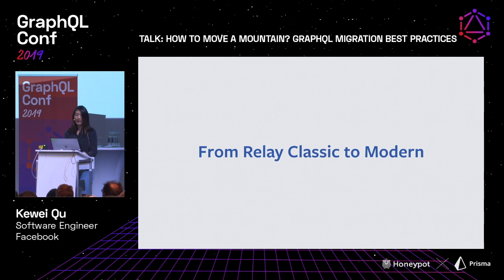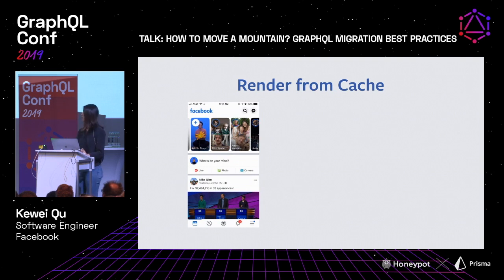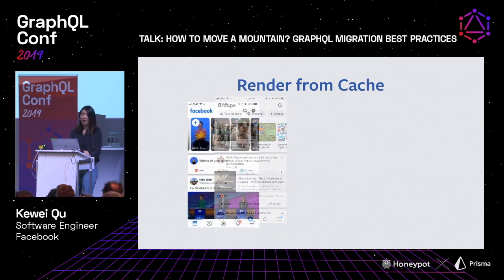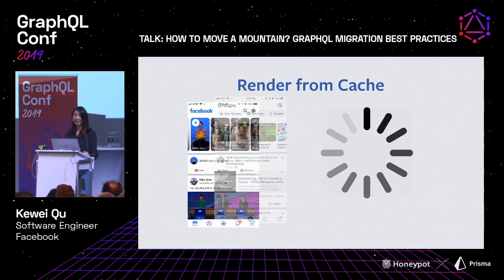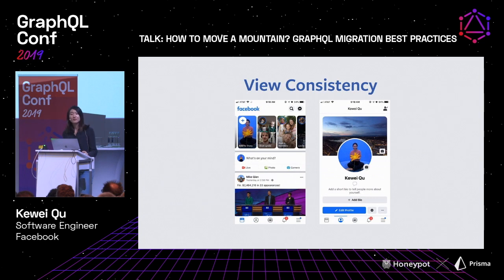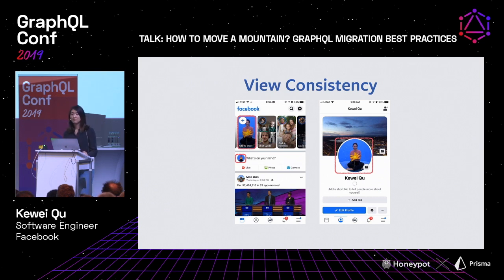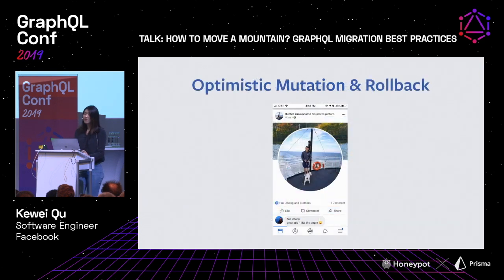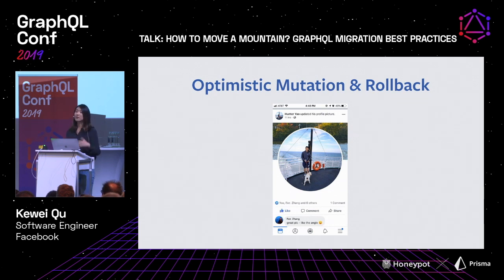Relay Classic already provides us with a lot of features to make our app a better experience. To name a few: we have render from cache — if I navigate from one surface to another and come back, I should be able to render immediately from cache without showing a spinner or going to the network again. Next, we have view consistency — if I change my profile picture, everywhere in the app that shows my profile picture should display the new one. And lastly, we have optimistic mutations and rollback. If our users click the like button under a post, we should expect the like button to turn blue immediately without waiting for the server to perform the transaction.